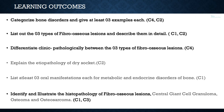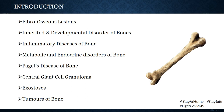In today's topic we are going to discuss fibro-osseous lesions in detail. Various disorders can affect the bone. The craniofacial skeleton is a complex of bones which primarily involves the maxilla and mandible, as well as the zygoma, sphenoid bone, and others. A number of pathologies can involve these bones, grouped as fibro-osseous lesions, inherited and developmental disorders, inflammatory diseases, metabolic and endocrine disorders, Paget's disease, central giant cell granuloma, exostosis, and various tumors.